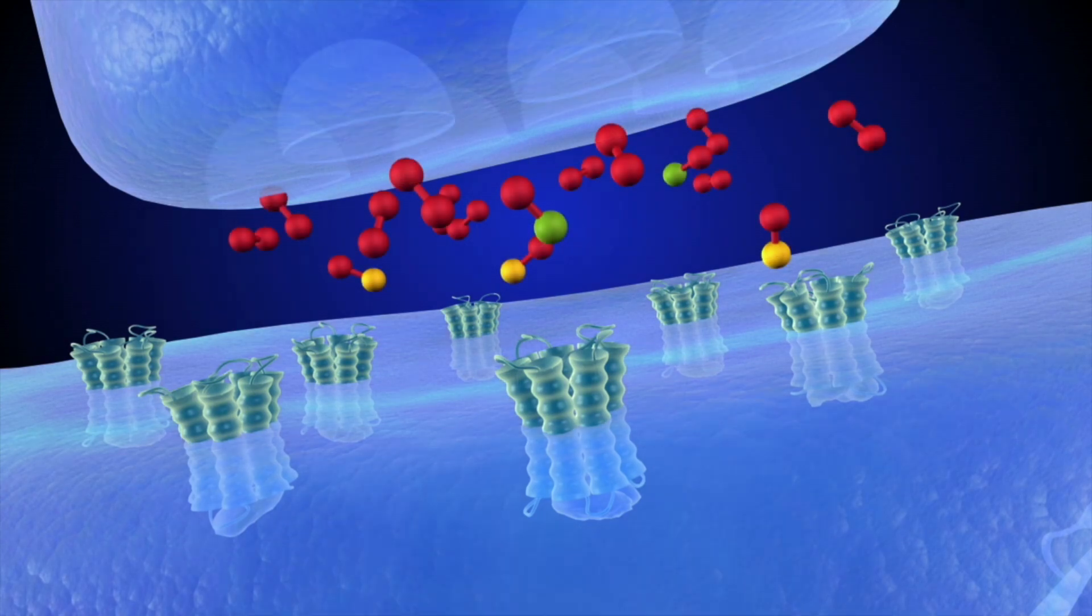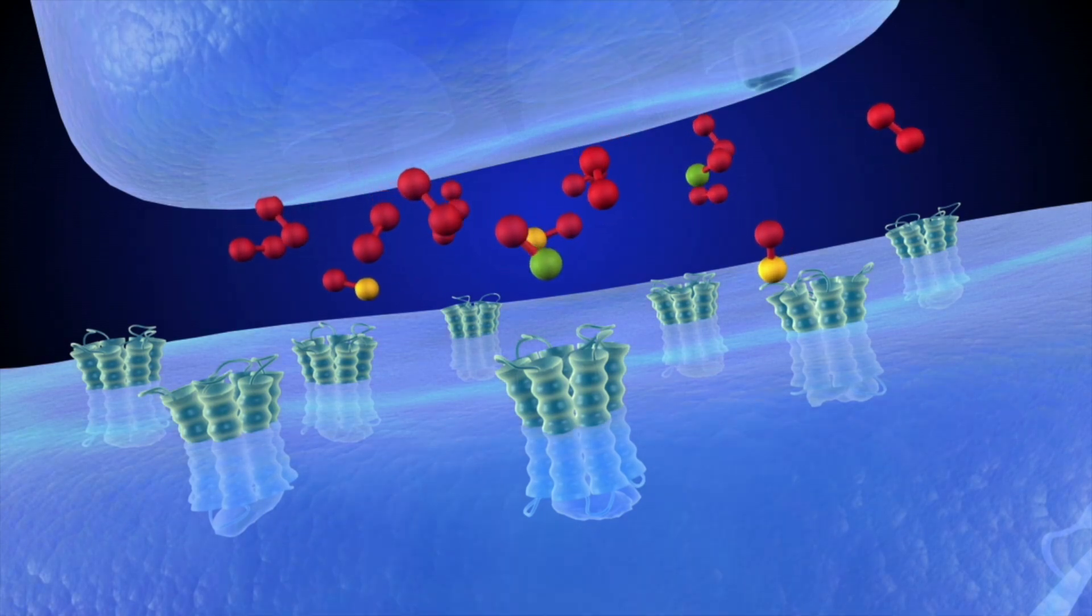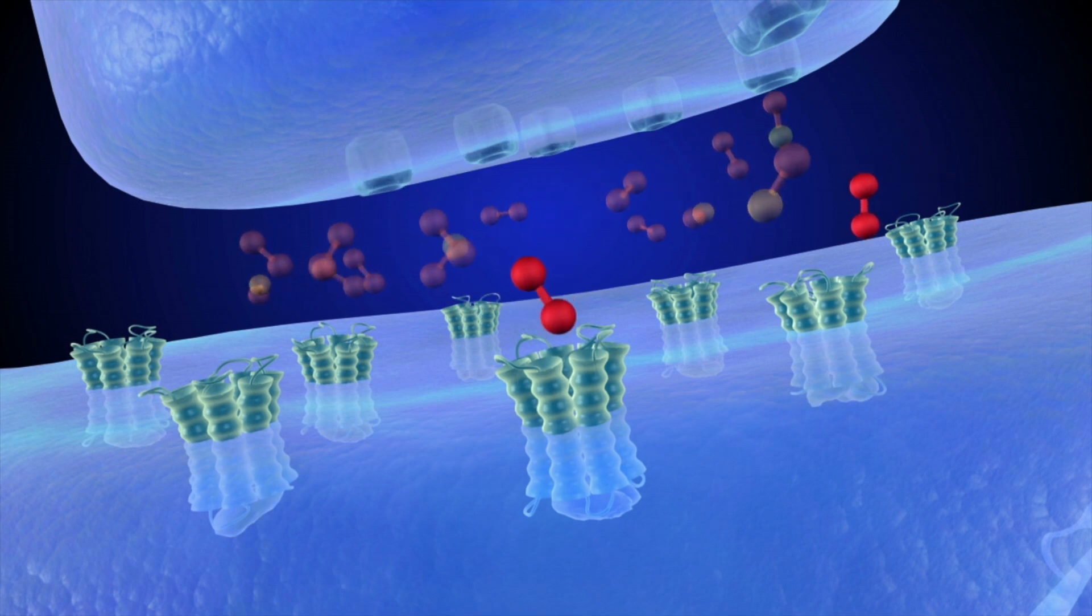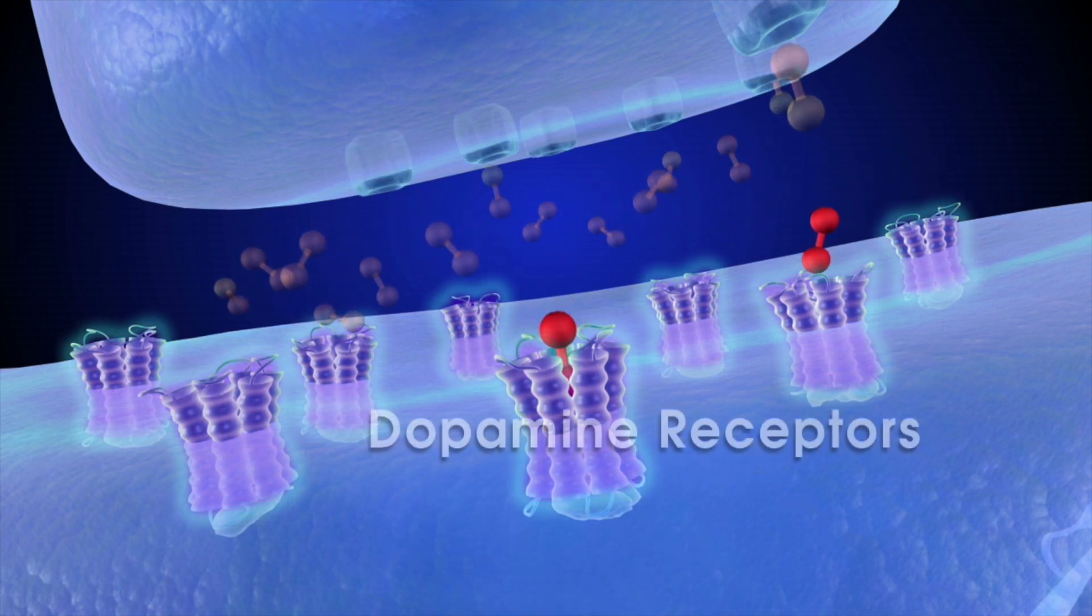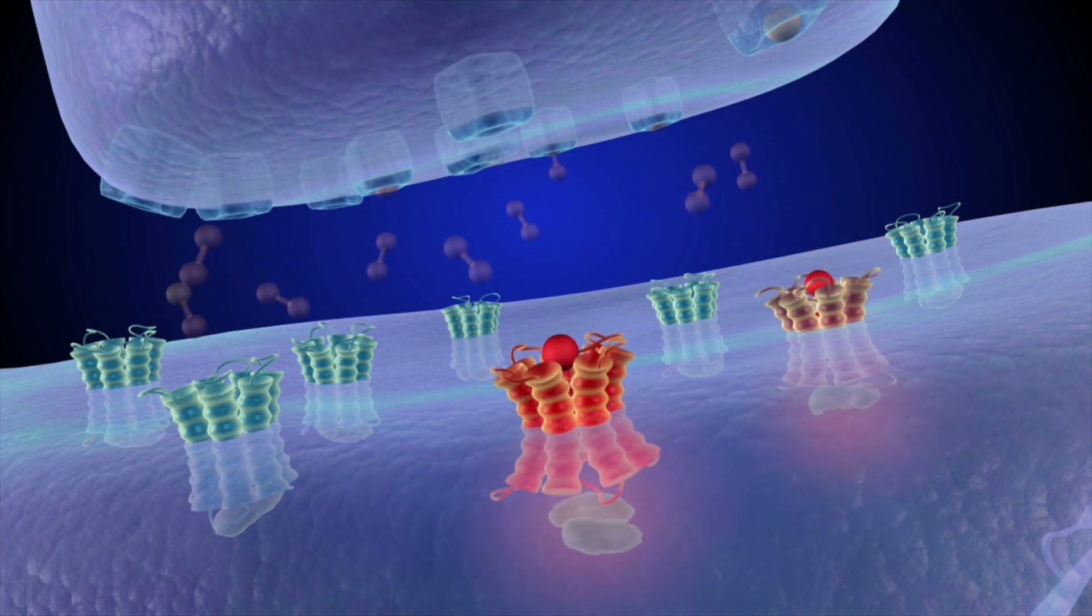In the reward circuit, dopamine neurons release the neurotransmitter dopamine. The released dopamine molecules travel across the synapse and link up with proteins called dopamine receptors on the surface of the receiving cell.